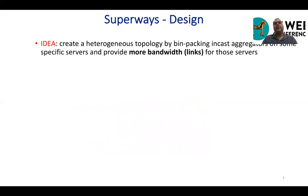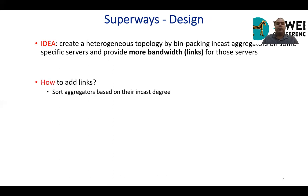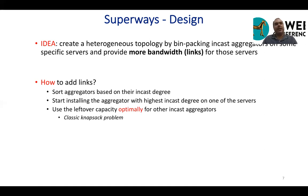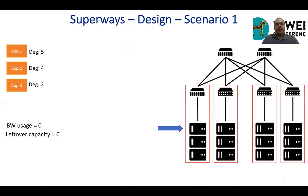What is the whole idea? The idea is creating a heterogeneous topology by bin packing in-cast aggregators onto specific servers and then providing more bandwidth or links for those servers. The steps are: first, sort aggregators by their in-cast degree, then start installing the aggregator with the highest in-cast degree on one of the servers. Then we use the leftover capacity optimally for other in-cast aggregators — this is a classic knapsack problem. For example, with three in-cast aggregators with in-cast degrees of five, four, and two, and one elected physical server, the initial bandwidth usage is zero and leftover capacity is C.